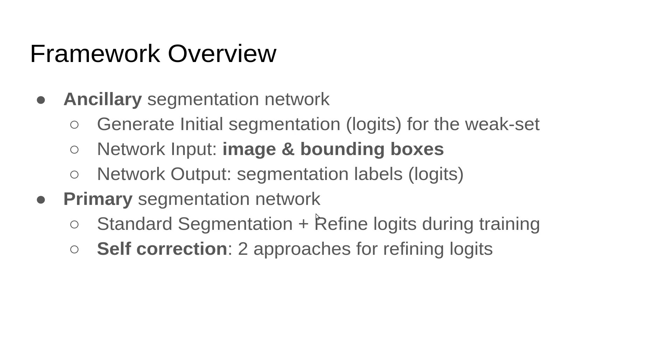The approach consists mainly of a few things. First is an ancillary segmentation network whose main purpose is to generate initial segmentations for the weak set. Specifically, we adjust a semantic segmentation network to accept an image and bounding boxes, then generate logits. Then a primary segmentation network utilizes the logits coming from here, plus a couple of refining approaches for these logits.